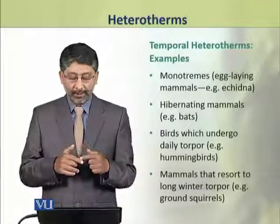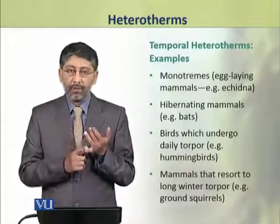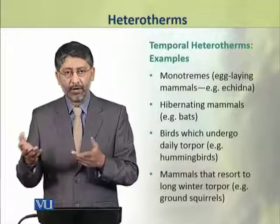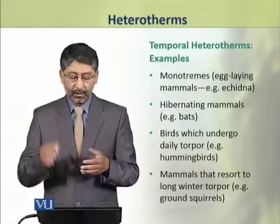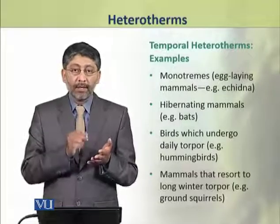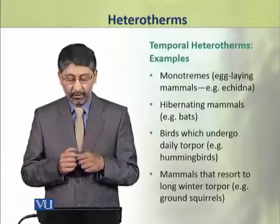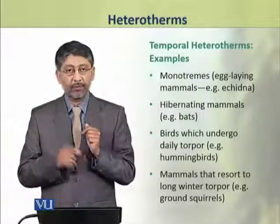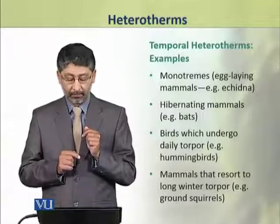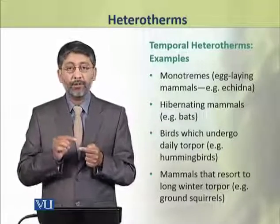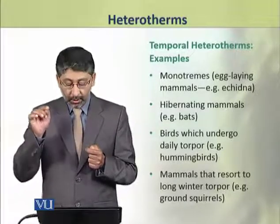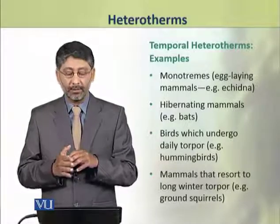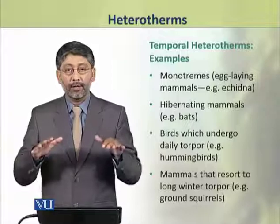We shall take a few examples of temporal heterotherms. These include monotremes, which are egg-laying mammals. Many hibernating mammals, for example bats. Birds which undergo daily torpor, for example hummingbirds. And mammals which resort to long winter torpor, for example ground squirrels. These are all temporal heterotherms.